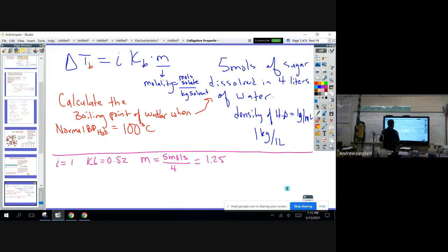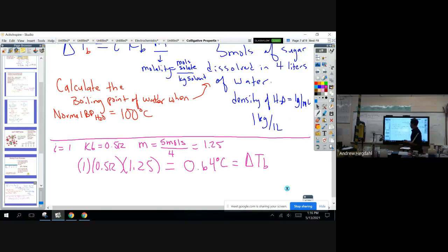Now we can just put in our numbers. So we get 1 times 0.512 times 1.25, which equals 0.64 degrees Celsius equals the change in the boiling point temperature. So then the actual boiling point, or the new boiling point, is 100.64 degrees.